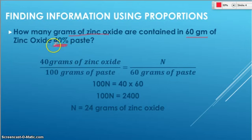We wrote it as 40 grams of zinc oxide because that's the active ingredient over a total of 100 grams of paste. 40 over 100 because it's 40 percent. So 40 grams of drug in every 100 grams of paste.